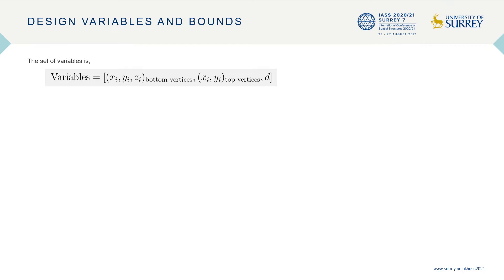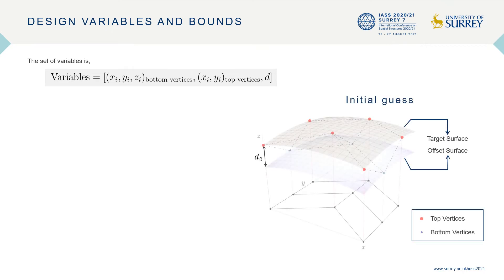Note that the z coordinates of the top vertices are constrained to be on the target surface and therefore are not free variables.